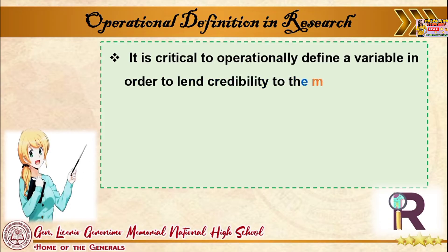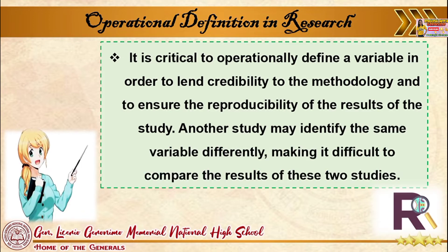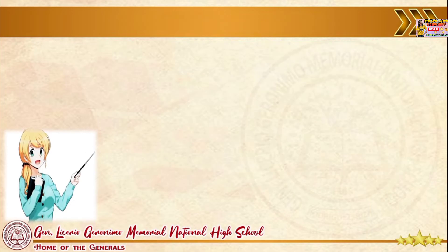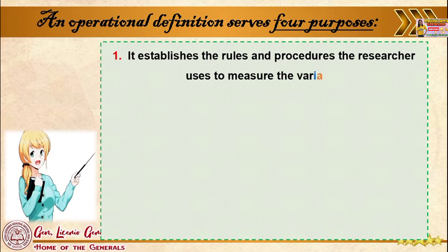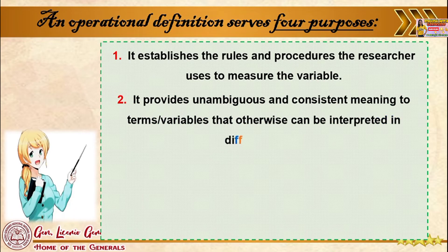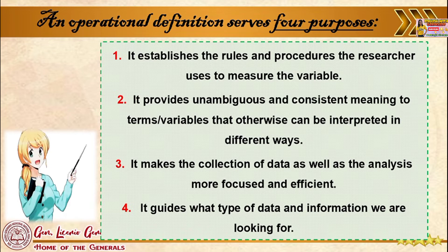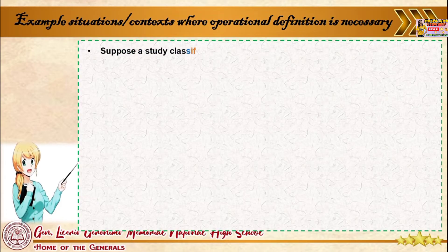Regarding operational definitions in research: it is critical to operationally define a variable in order to lend credibility to the methodology and to ensure the reproducibility of the results of the study. Another study may identify the same variable differently, making it difficult to compare results. An operational definition serves four purposes: one, it establishes the rules and procedures the researcher uses to measure the variable; two, it provides an unambiguous and consistent meaning to terms and variables; three, it makes the collection and analysis of data more focused and efficient; four, it guides what type of data and information we are looking for — for example, situations and contexts where an operational definition is necessary.